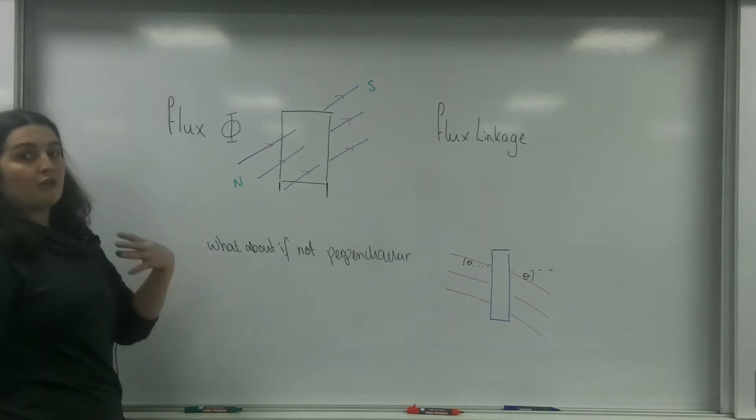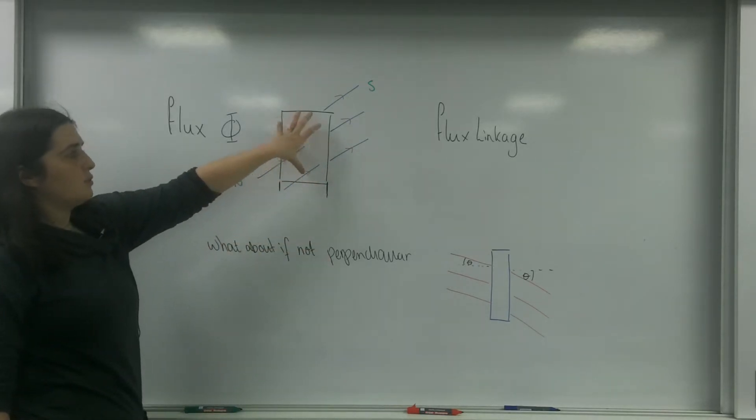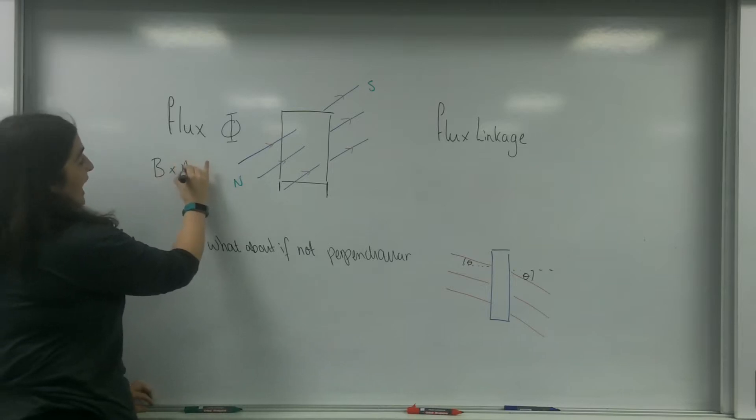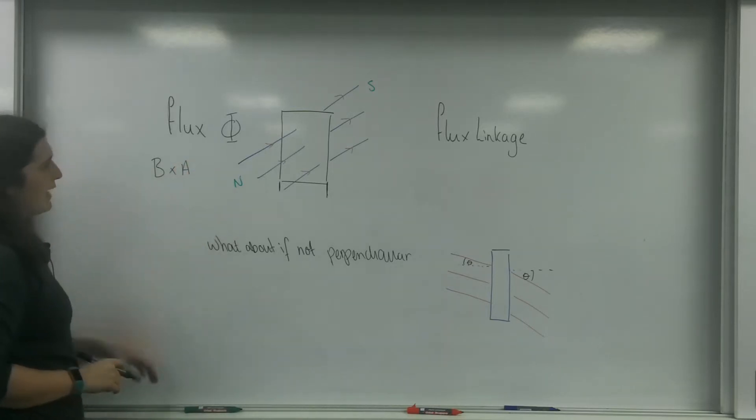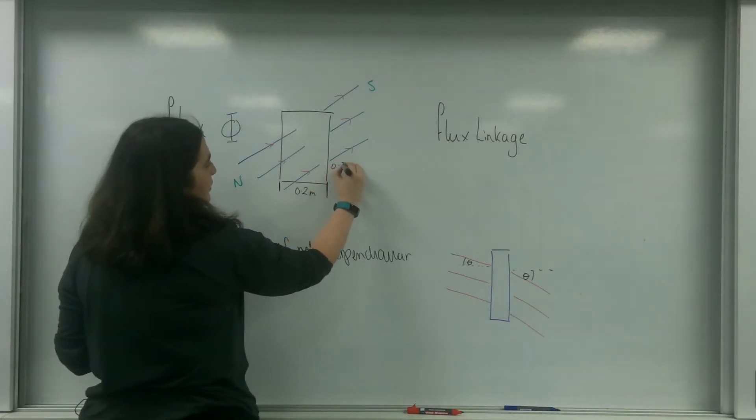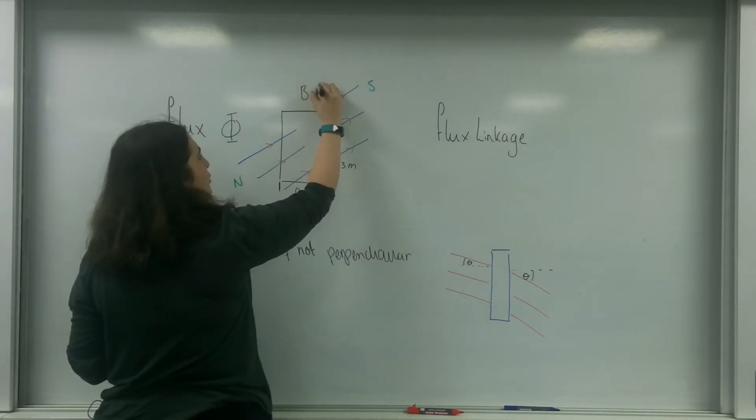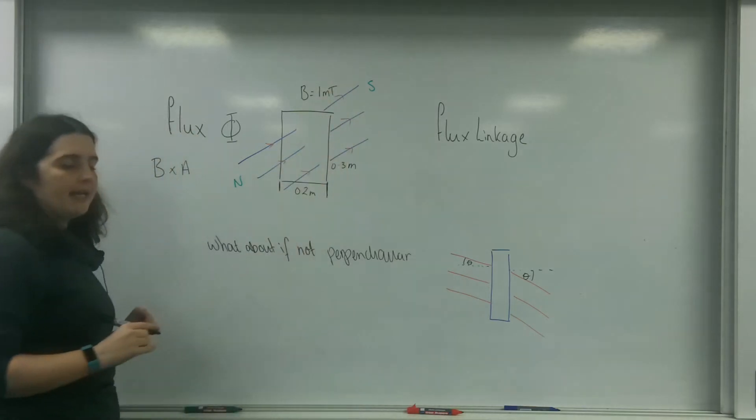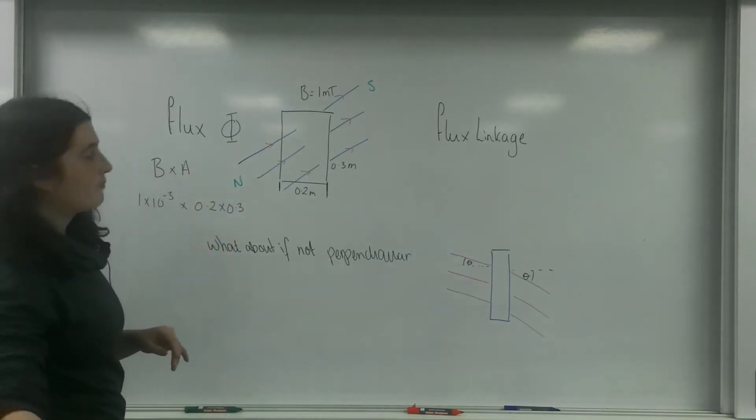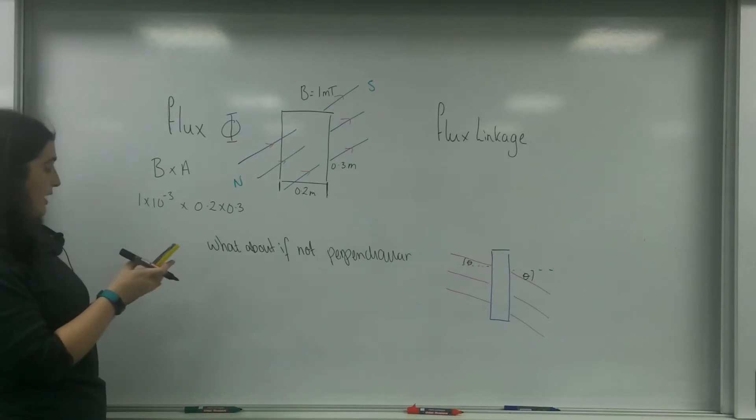I'm trying to work out the total flux that this little square is feeling. I'm going to have the magnetic field strength going through it and times it by the area. In this case, if this was 0.2 meters and this was 0.3 meters and the field had a field strength of 1 millitesla, my flux is going to be 1 times 10 to the minus 3 times by my area, which is 0.2 times 0.3 because it's a square. So that's 1 times 10 to the minus 3 times 0.2 times 0.3.